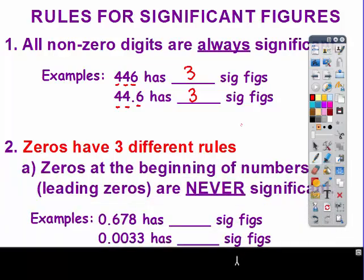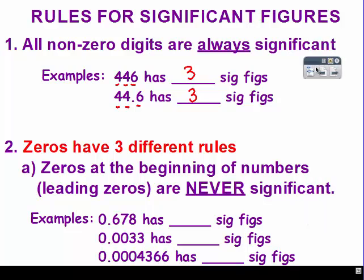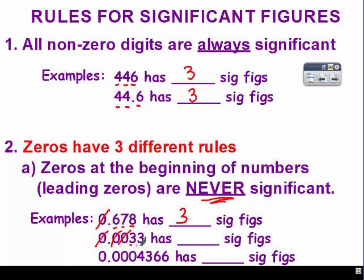Zeros are where it becomes a little bit more tricky. Zeros at the beginning of numbers are never significant — they're just leading zeros. They are very important, they just don't influence the accuracy of our numbers. In the first example, that leading zero doesn't count, and we have three significant figures. In the next example, it doesn't matter that there are three leading zeros — none of them count, and so that gives two significant figures.